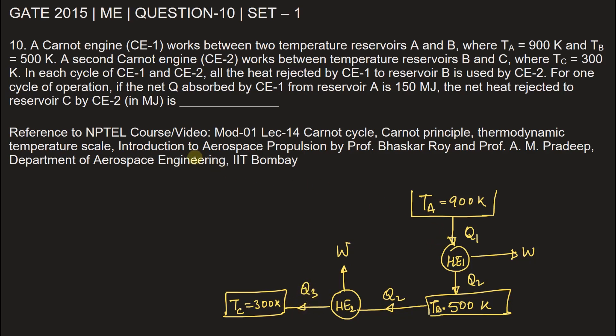Now it is also given in the problem that net heat absorbed by CE1, that is heat engine 1 from reservoir A is 150 megajoule, so Q1 is given 150 megajoule.